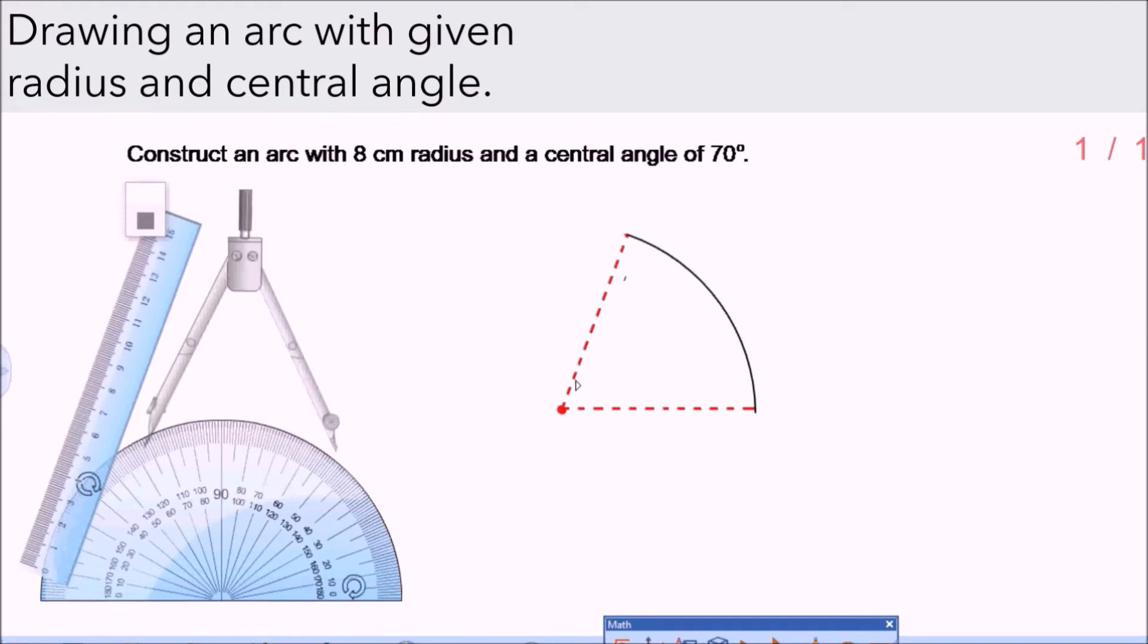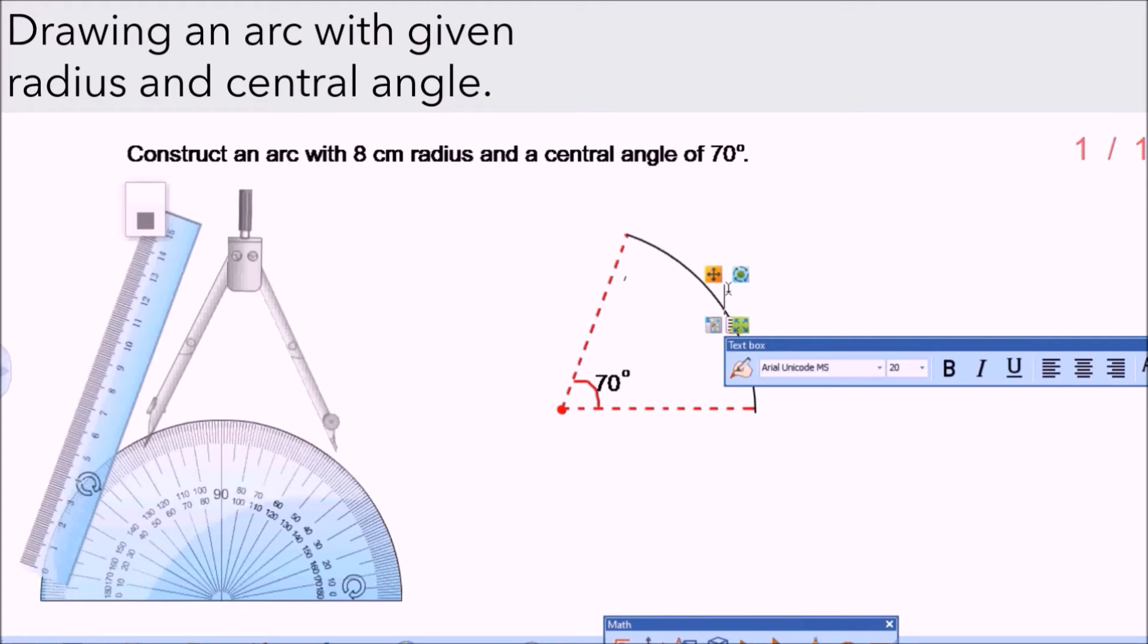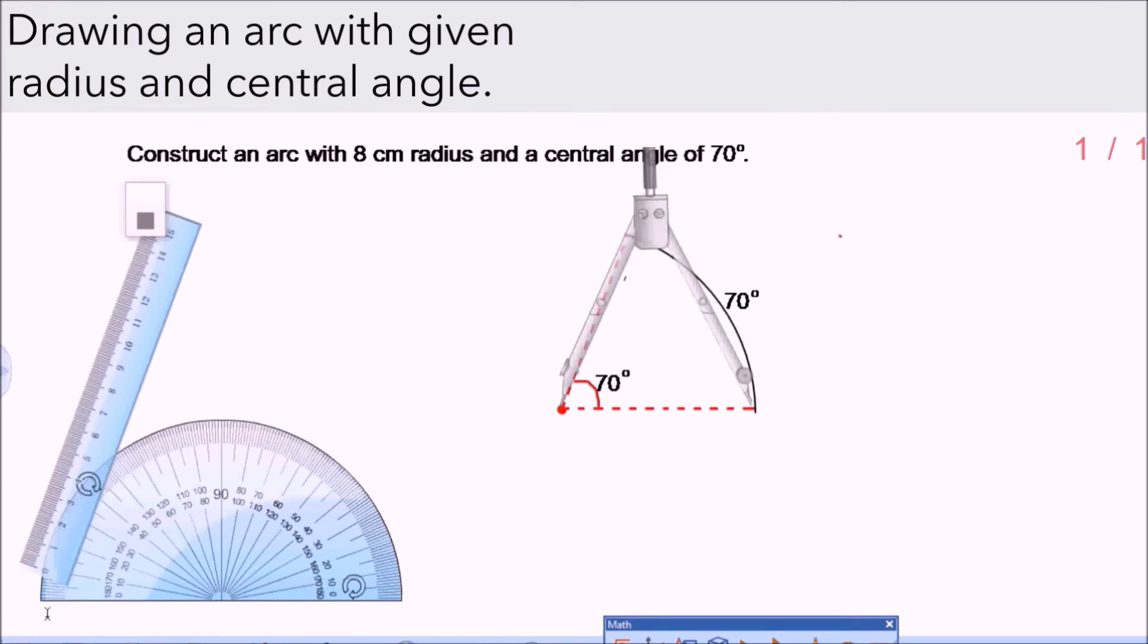As the central angle is 70 degrees, the arc is also 70 degrees, so you can label them. Take note that this arc is a part of a circle. So if you draw a circle around it, it will look like this, the whole circle. And actually this circumference of this circle is an arc of 360 degrees.